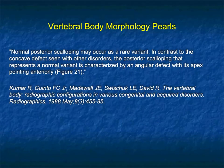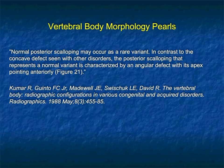Just to comment on posterior scalloping: it may occur as a rare normal variant. In contrast to the concave defects seen with other disorders, posterior scalloping representing a normal variant is characterized by an angular defect with the apex pointed anteriorly. When I see posterior scalloping, I'm thinking about Marfan's, neurofibromatosis, or any of those neural tumors.